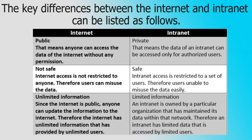The internet has unlimited information because it is public and anyone can update information to the internet, so the internet has unlimited information provided by unlimited users. But an intranet has limited data because it is owned by a particular organization that maintains its data within that network, and therefore an intranet has limited data that is accessed by limited users.